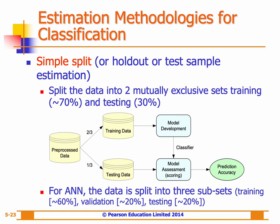An important aspect of constructing classification models is data splitting — dividing data into at least two parts: one for training and one for testing or evaluating the model. The simplest strategy is to randomly allocate two-thirds of the data to the training set and one-third to the test set. An exception occurs with artificial neural network classifiers, where data is partitioned into three subsets: training, validation, and testing. The validation set is used during training to prevent overfitting, which will be covered in next week's lecture.